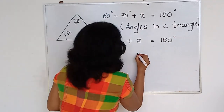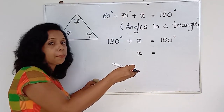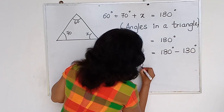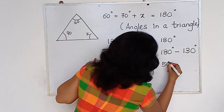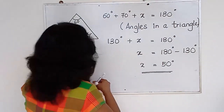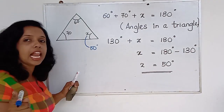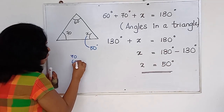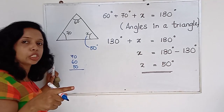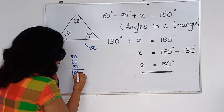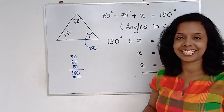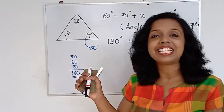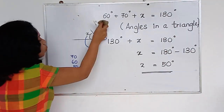Then 60 plus 70 is 130 degrees, plus x equals 180 degrees. I keep x on this side and bring 130 to the other side, so it becomes 180 minus 130. The answer: x equals 50 degrees. You can check: 70 plus 60 plus 50 equals 180 degrees — your answer is correct. If given two angle values, find the missing one using: angles in a triangle add up to 180.